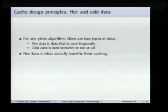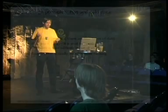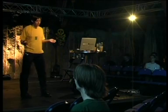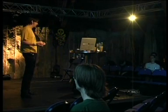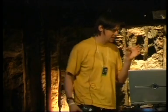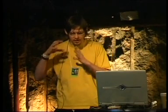So you should make sure that hot data is being cached properly. For example, if you have a very simple program that just counts how often each character in a text file occurs, you have some array for each character code and count how often these characters occur. That array will usually be hot data because it's a small region of memory accessed every single byte you process, while the text message itself, which is just read once through, is cold data because it's just accessed once.